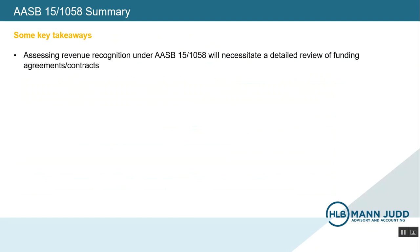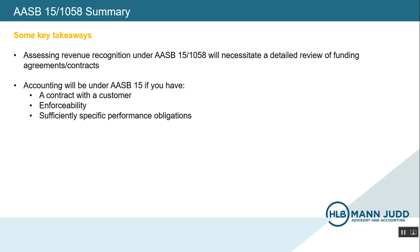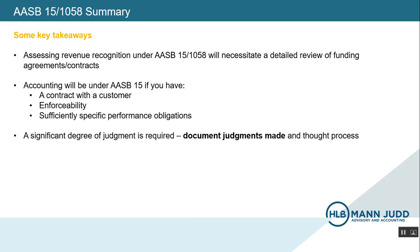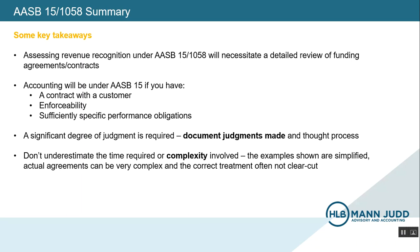So finally, I just want to recap some of the key takeaways from this session. Assessing revenue recognition under AASB 15 and 1058 is complex and may require organizations to review funding agreements in a greater level of detail than they have previously. You will be accounting under AASB 15 if you have all three of: a contract with a customer, enforceability, and sufficiently specific performance obligations. A significant degree of judgment is required. I would suggest that you document the judgments you have made and the thought process behind the conclusions reached. Don't underestimate the complexity involved and therefore the time that is required. And do seek help if you need it.